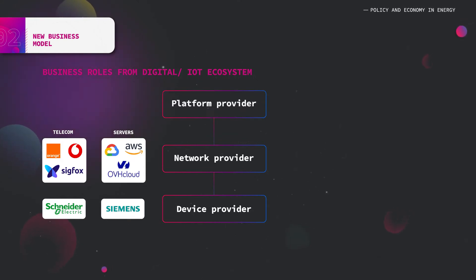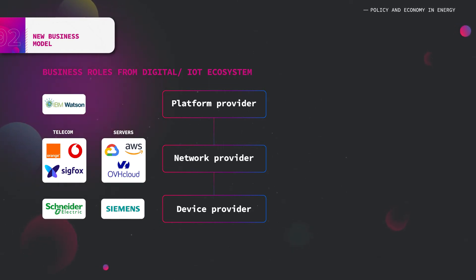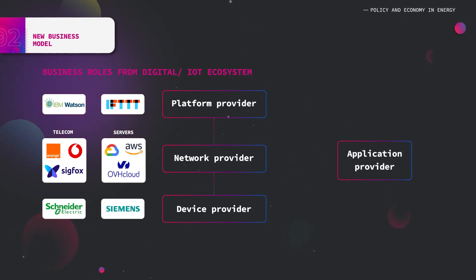Next, there are the platform providers — companies who offer APIs or open interfaces that ease the development of applications. The role of these companies is more focused on software aspects. Some examples include IBM Watson and IFTTT.